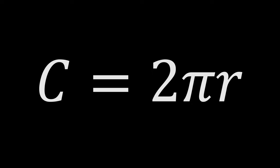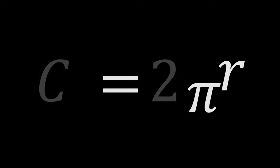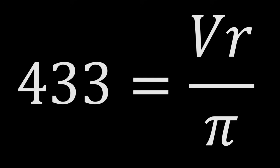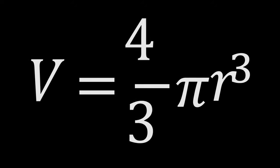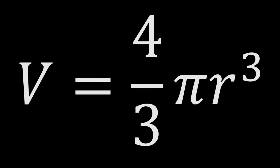Let's do one more warm-up before we get started. For this one, you're given 4/3 equals V times R over pi. It looks ridiculous at first, but keep the following rule in mind: none of the symbols from the original formula have changed, only their positions have changed. Give this a shot before I show the solution. You can see that it's actually just the formula for the volume of a sphere.